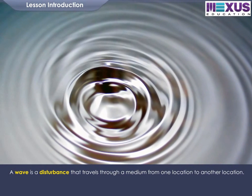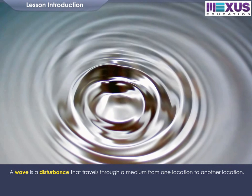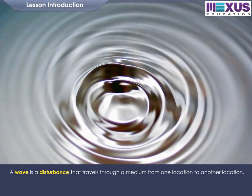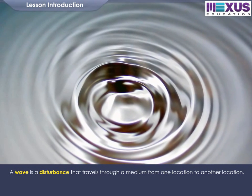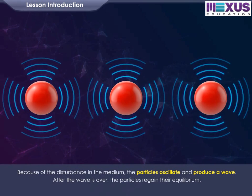A wave is a disturbance that travels through a medium from one location to another location. Because of the disturbance in the medium, the particles oscillate and produce a wave. After the wave is over, the particles regain their equilibrium.